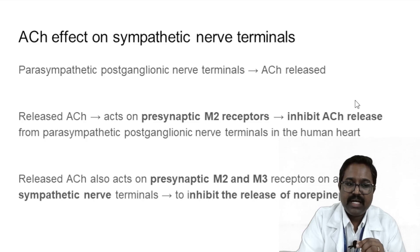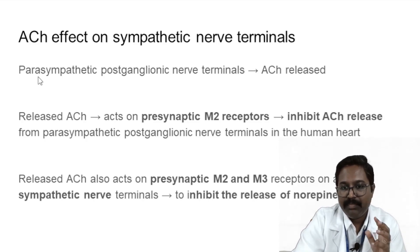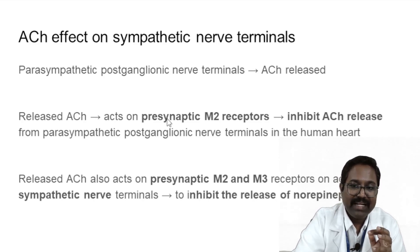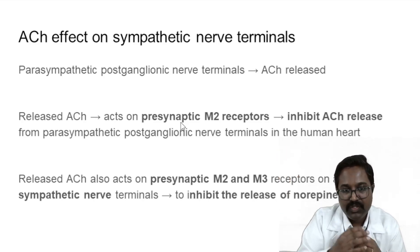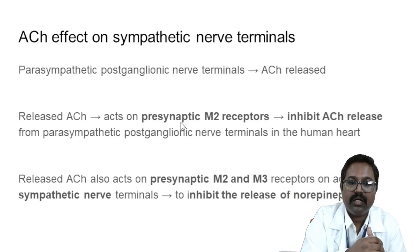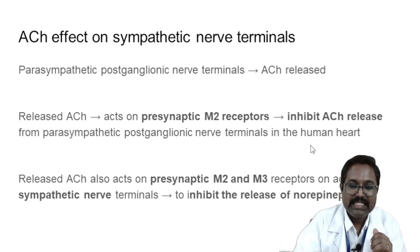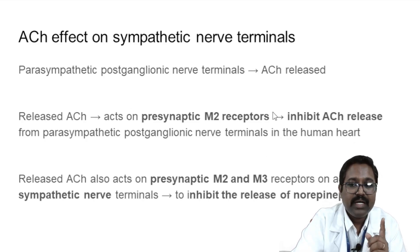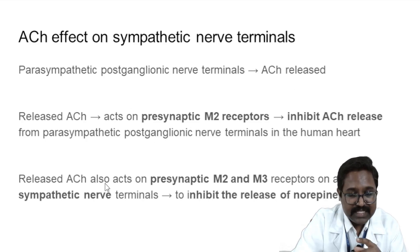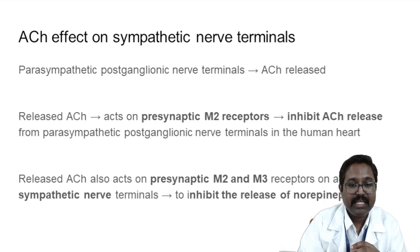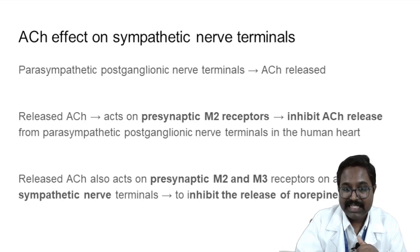Regarding acetylcholine effects on sympathetic nerve terminals: released acetylcholine from parasympathetic postganglionic nerve terminals can act on presynaptic M2 receptors, inhibiting further acetylcholine release from those parasympathetic postganglionic terminals in the human heart. Released acetylcholine can also act on presynaptic M2/M3 receptors present in adjacent sympathetic nerve terminals, thereby also inhibiting the release of norepinephrine from adrenergic nerve terminals.